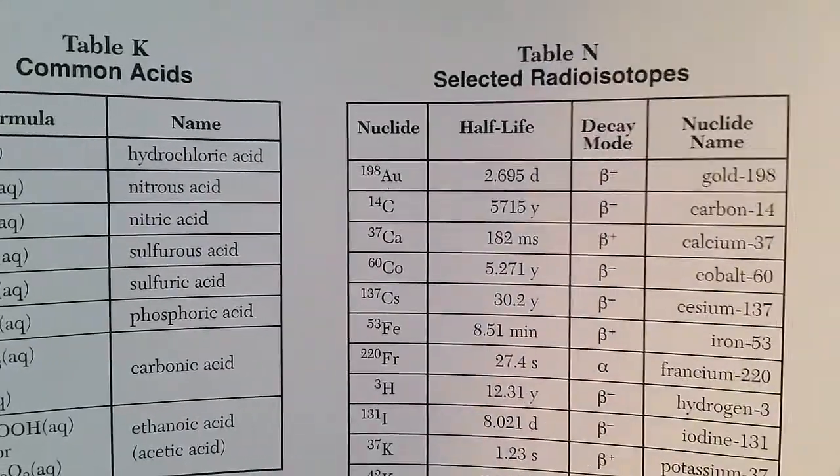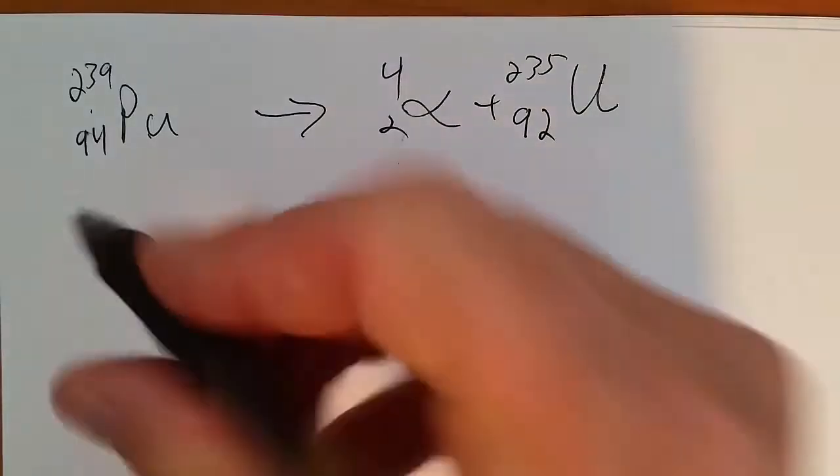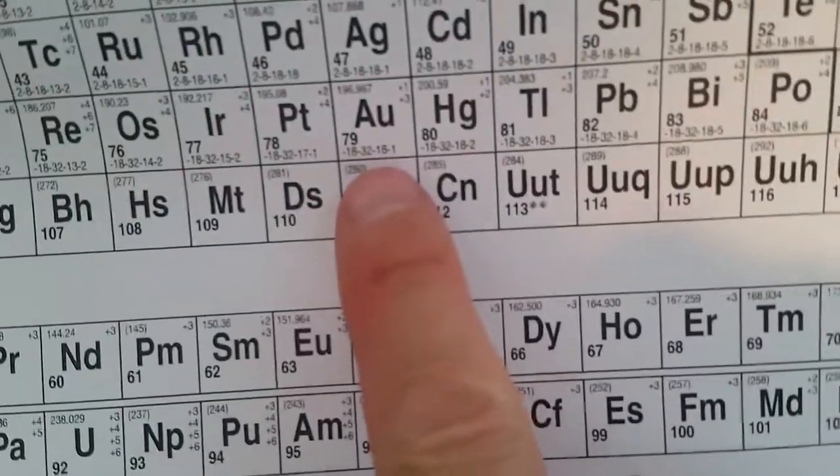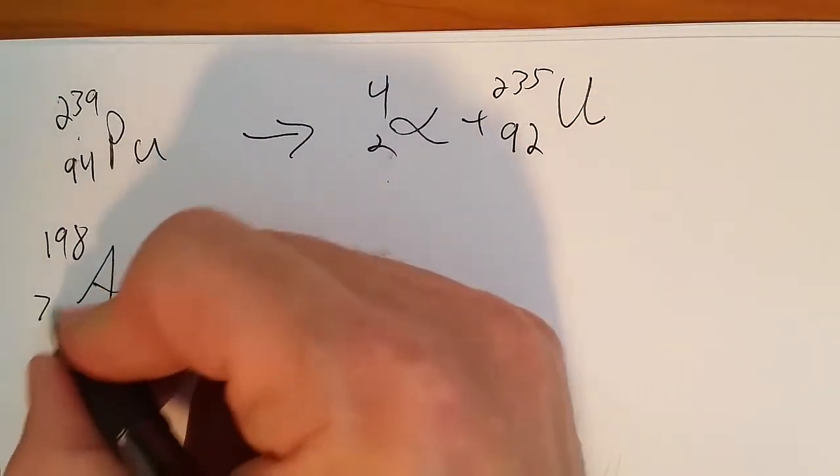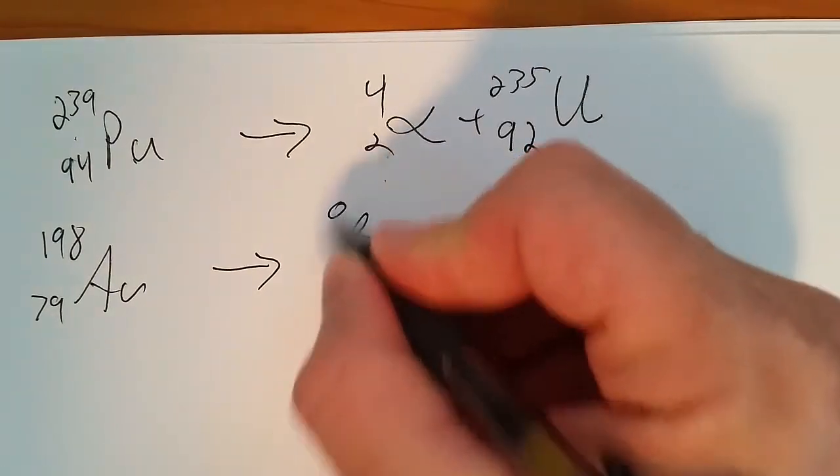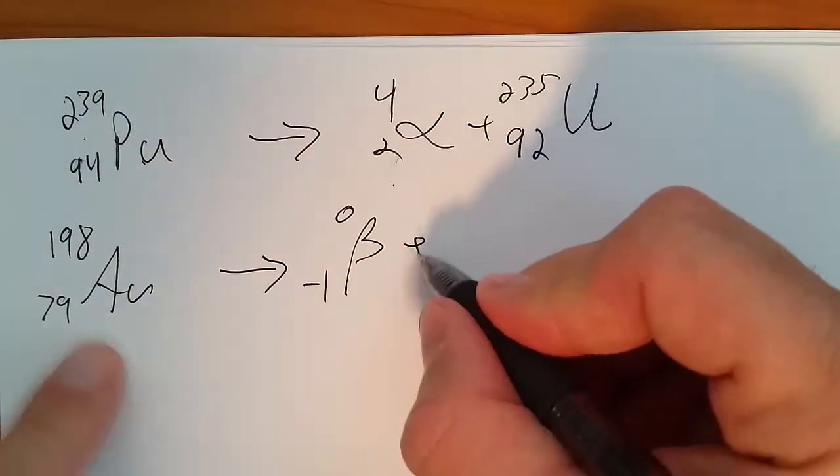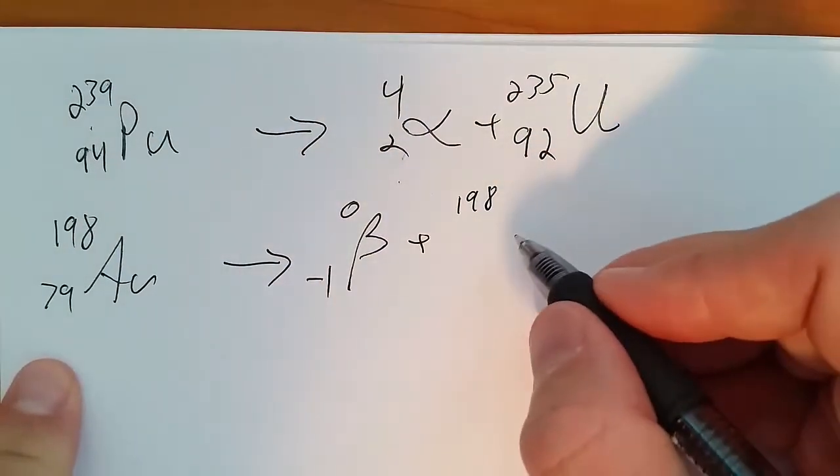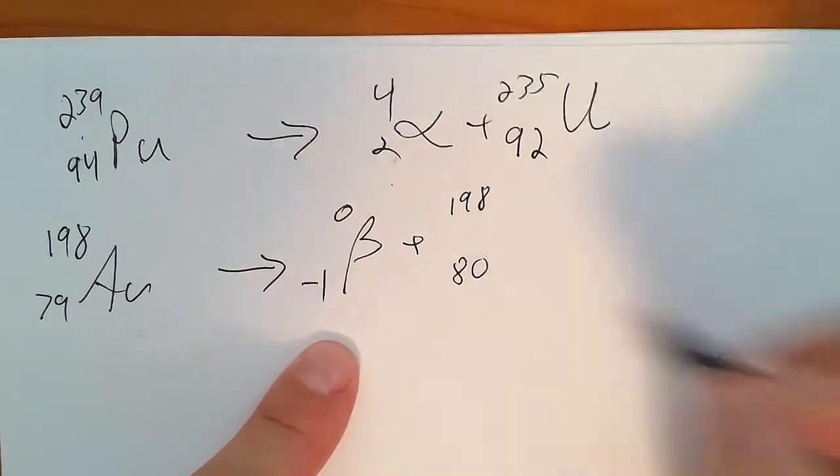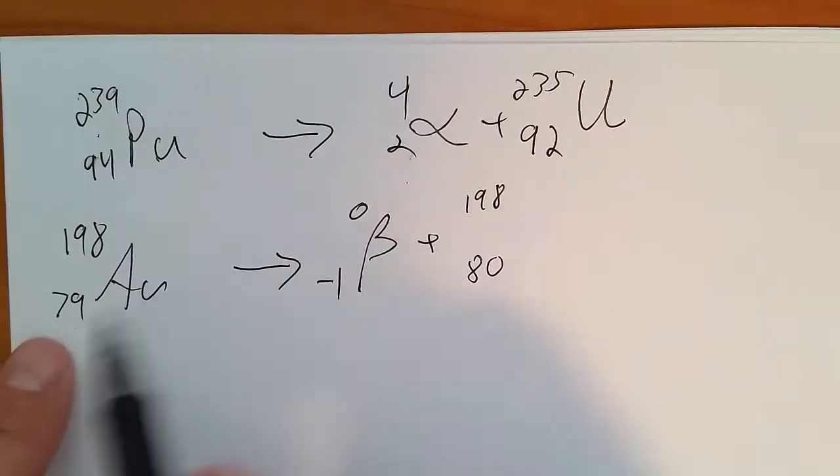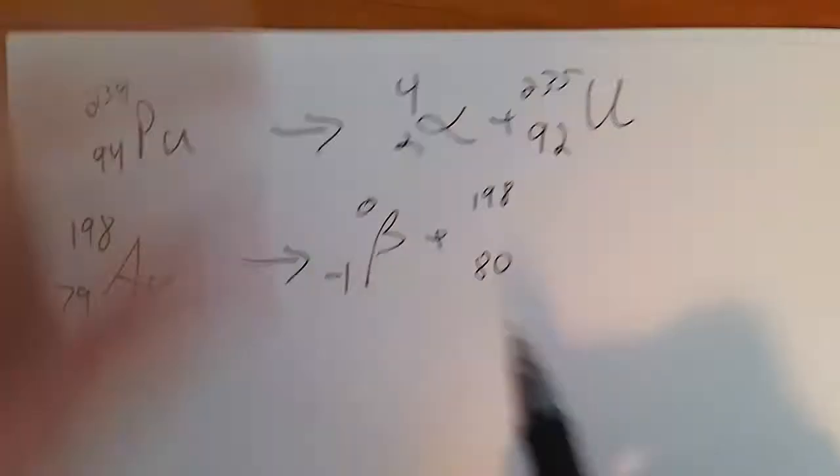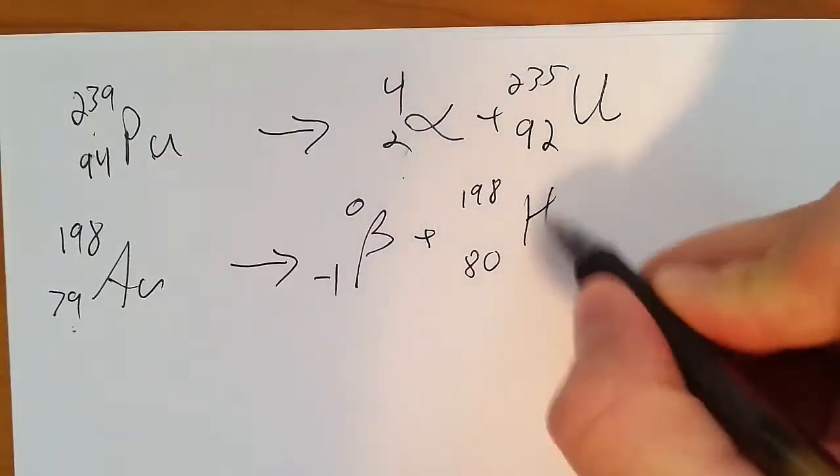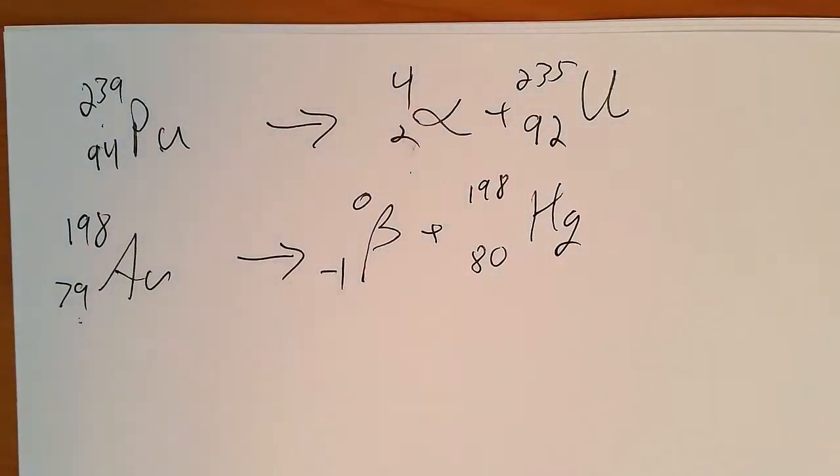Beta decay—look at the top one there, Gold-198, Au-198. We find gold, it's element 79. Going to undergo beta decay. Well, 198 minus 0 is 198, 79 minus negative 1 is 80. We double check: 79 on the left, 80 minus 1 is 79 on the right. Excellent. Element 80 is mercury. That would be beta decay.